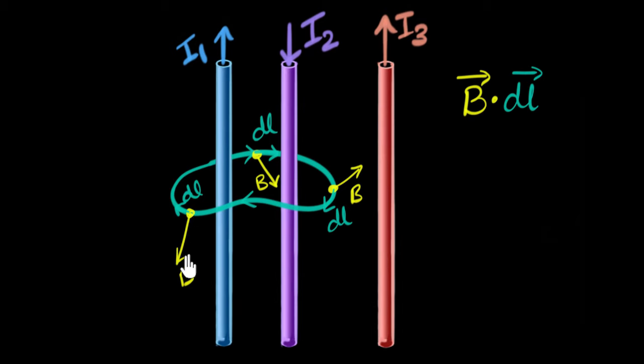And take a dot product of them, scalar product of them. So B·DL cos theta. You might know how to take the dot product by now. And do that everywhere. And he asks us to then take a summation of that. So add all of that up over the entire loop.